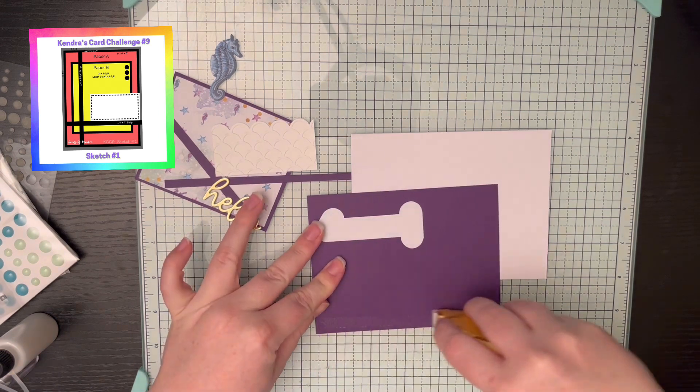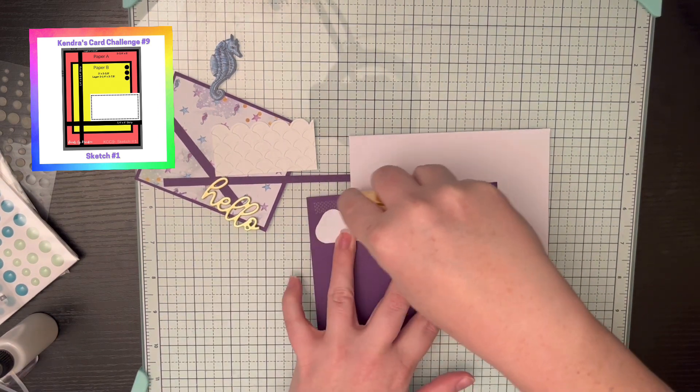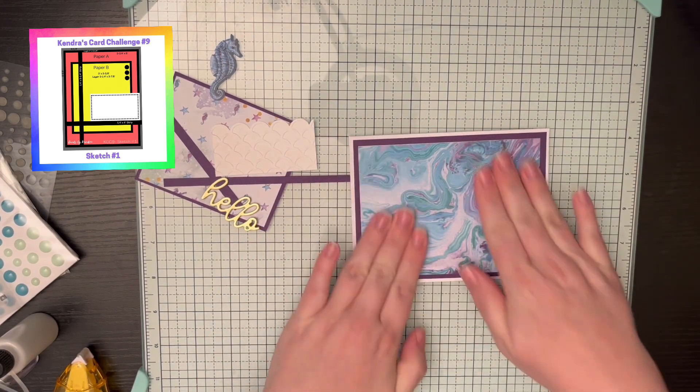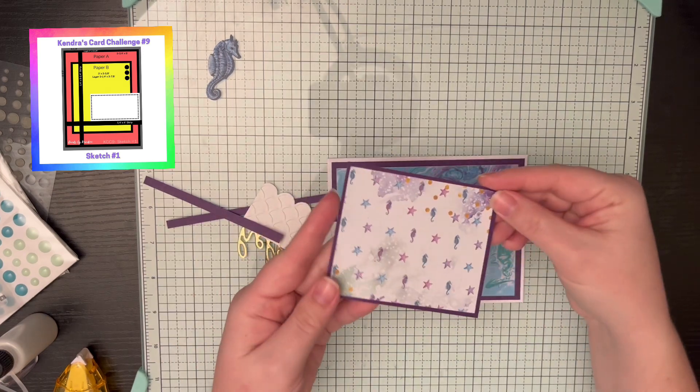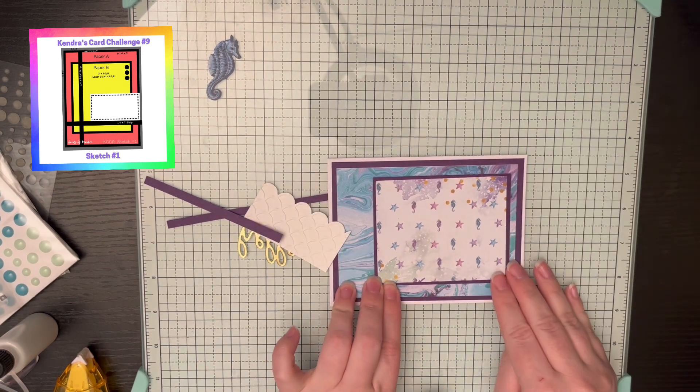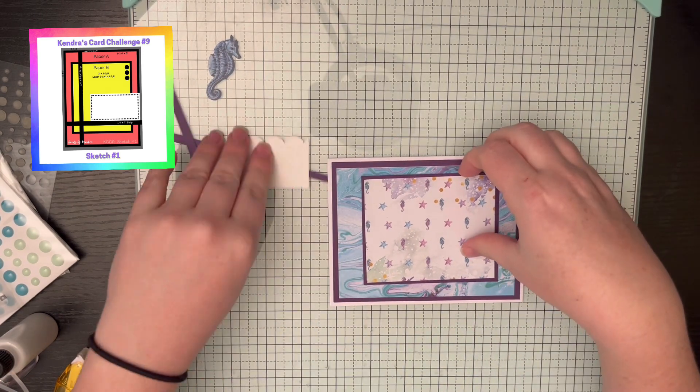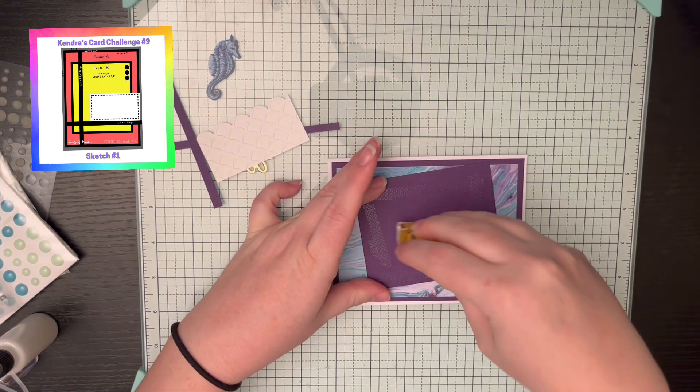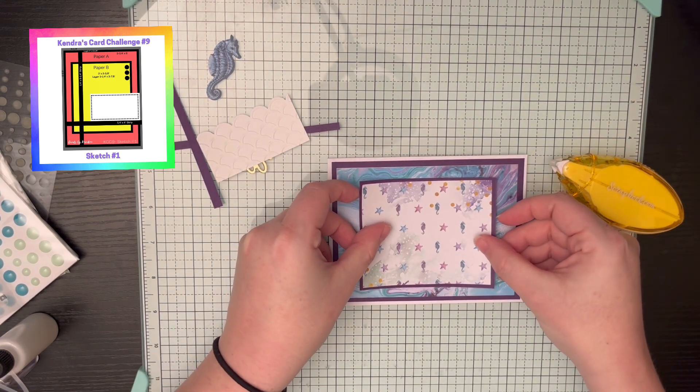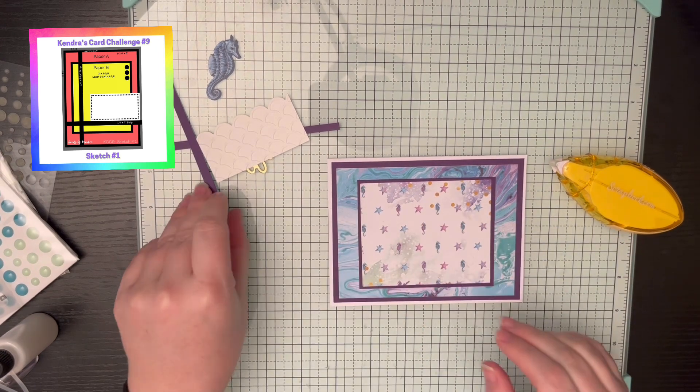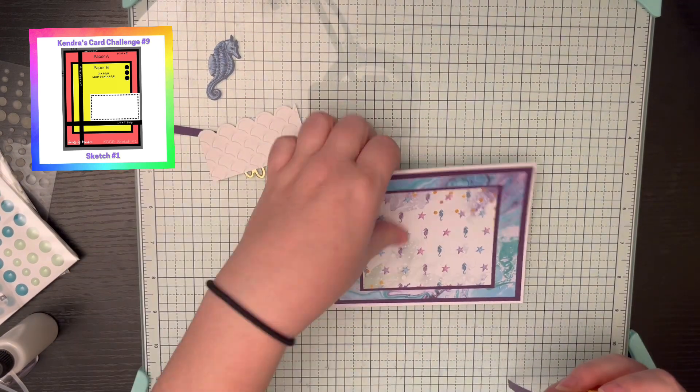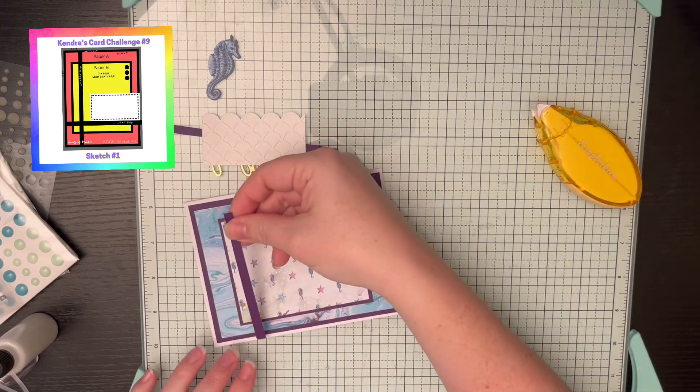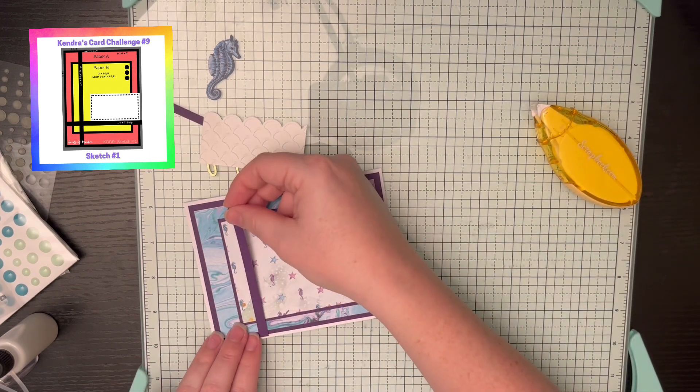This is sketch number one. As you can see there, I'm using some scrap paper to do some of my borders there. I had changed up this sketch to go horizontal instead of vertical because of that seahorse paper. Kendra makes it really easy to see which way the paper needs to be cut and if you have directional patterns on it, which way they need to go. And I still messed it up. So horizontal was the way we decided to go with this.